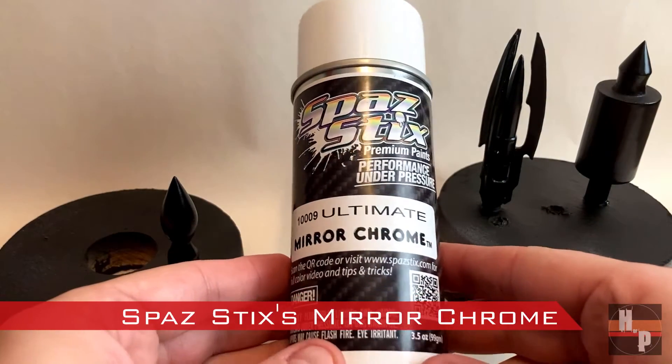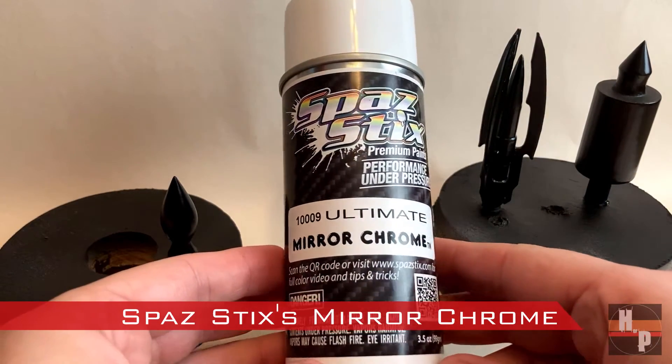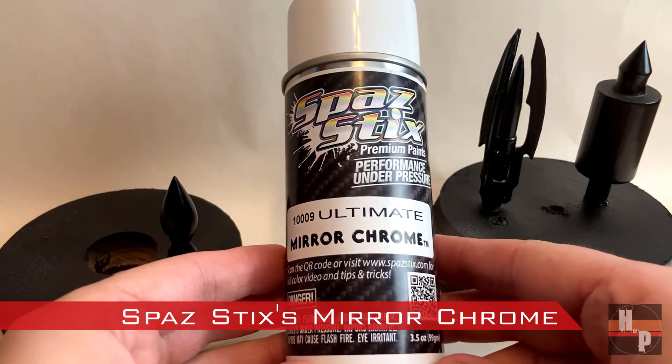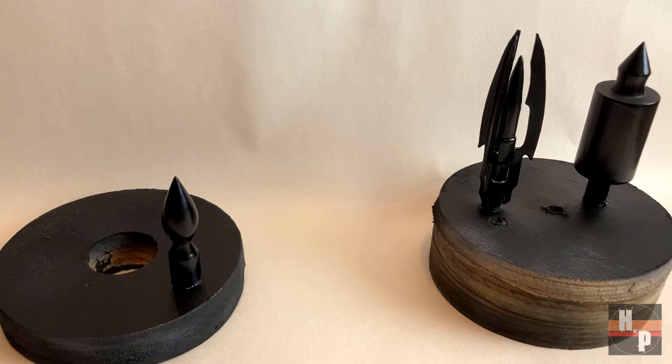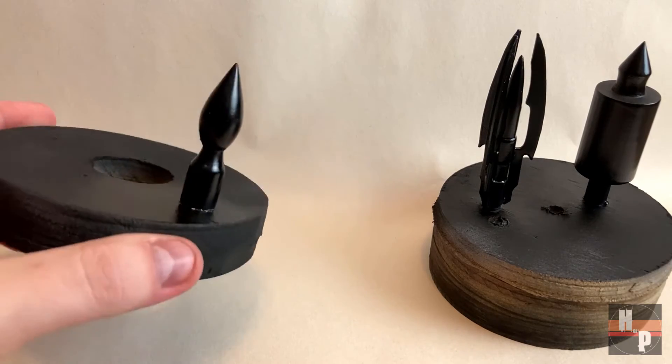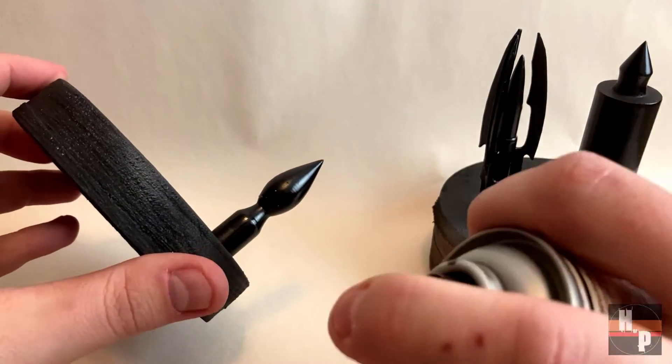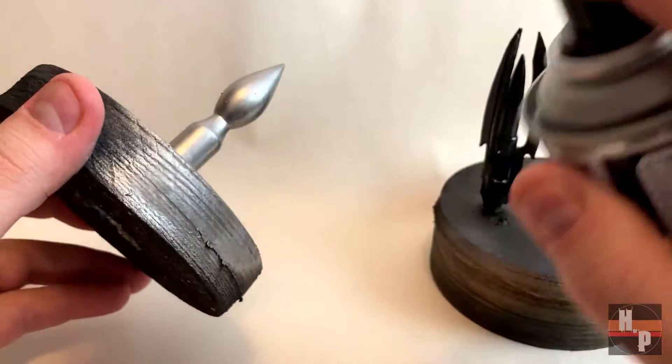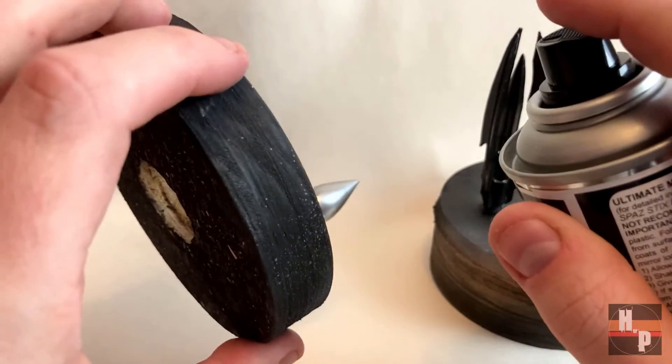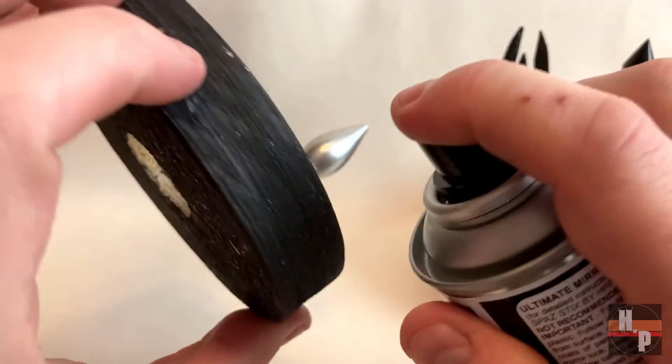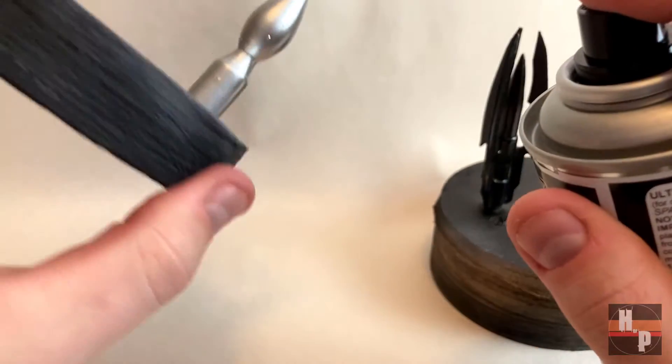I found this mirror chrome spray paint from Spastic. I've never used it before, so let's see how it does. Wow, this stuff looks great! It coats evenly and smoothly. Hopefully, it retains the shine after it dries.